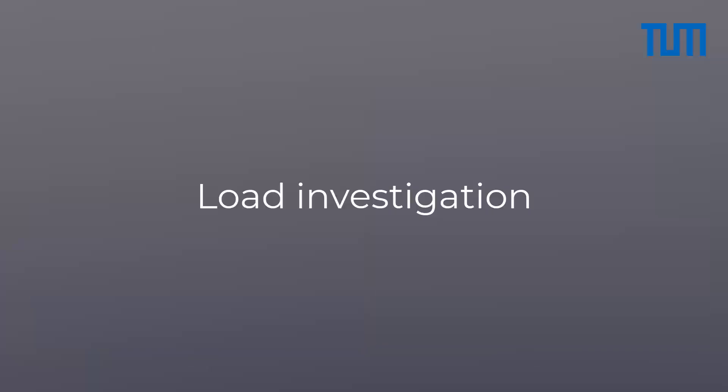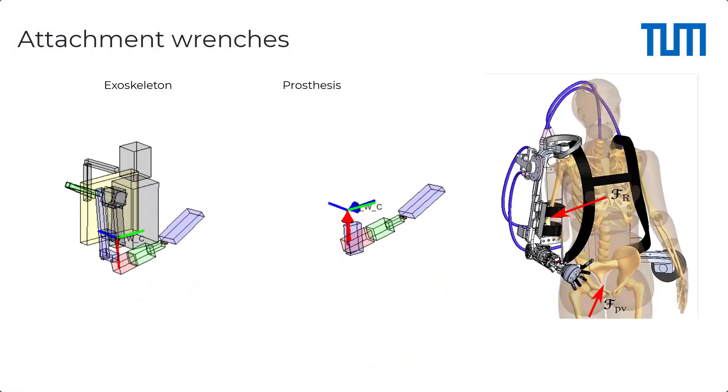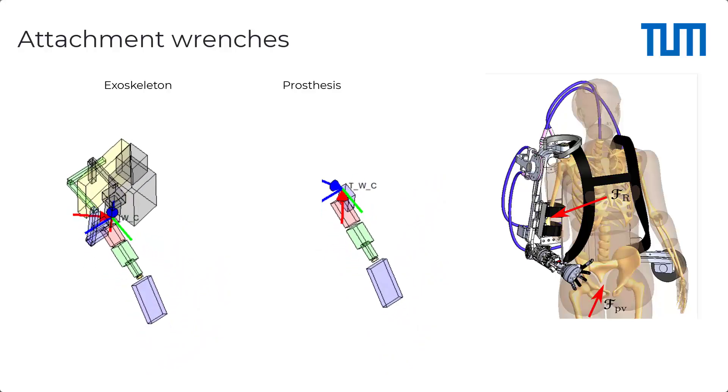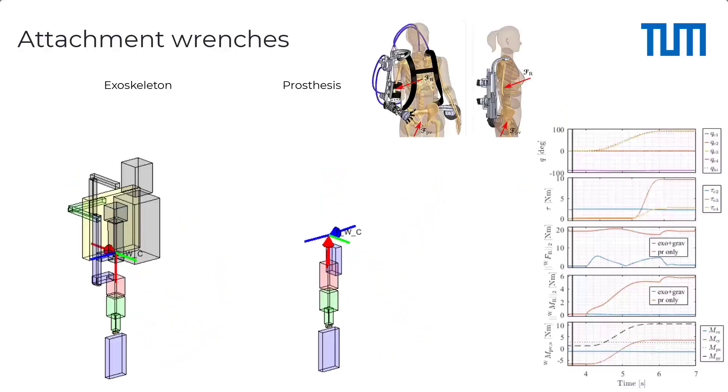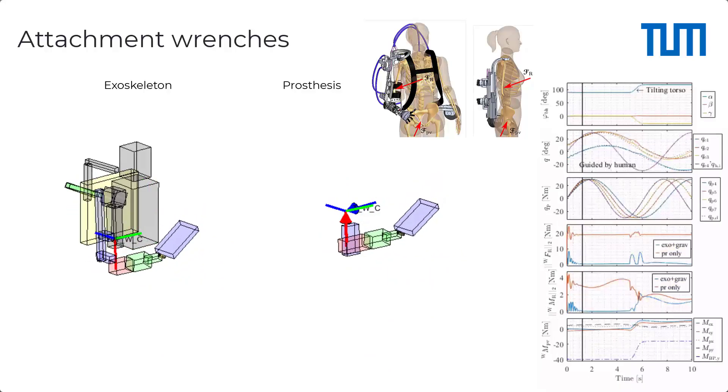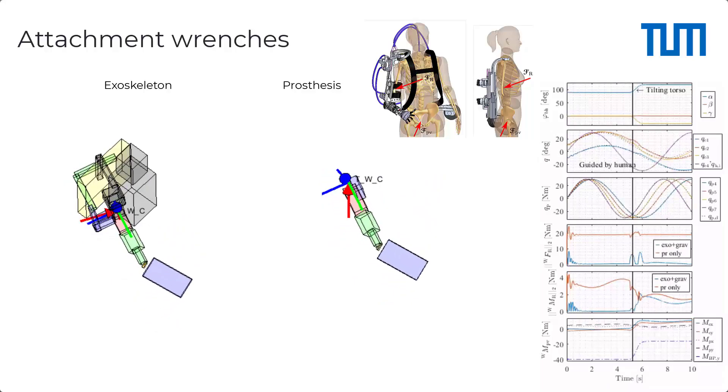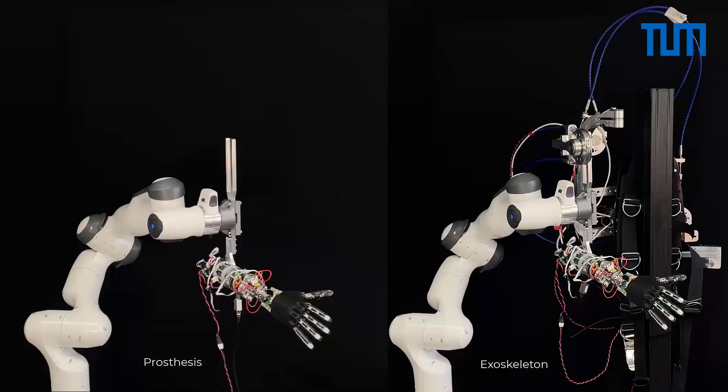Load investigation. We investigated the attachment wrenches at residual limb and pelvis by a numerical simulation. Forces and moments could be drastically reduced at the residual limb when using the exoskeleton. Moments at the pelvis are close to zero. An experimental realization of the aforementioned simulation is the following robot experiment.